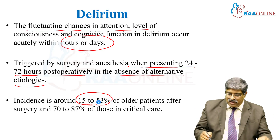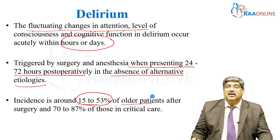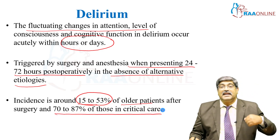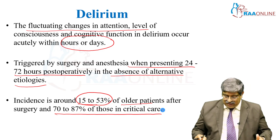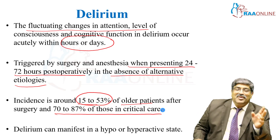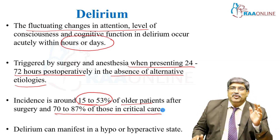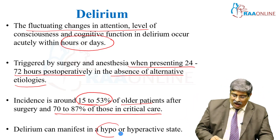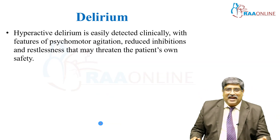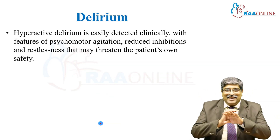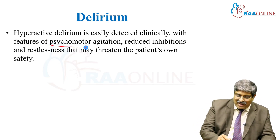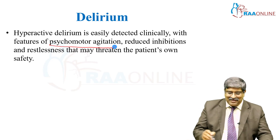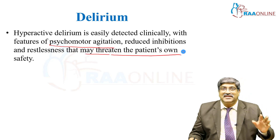The incidence is roughly around 15 to 53 percent in older patients and 70 to 87 percent in critical care — postoperative delirium is even higher in critical care. What is very important is that delirium should not always be thought of as a hyperactive state. In hyperactive delirium, you can detect it clinically because the patient is going to have psychomotor agitation, reduced inhibition, and restlessness that threatens the patient's own safety.